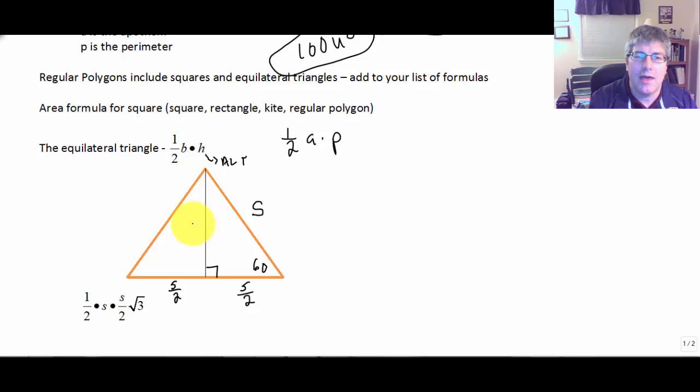And my altitude then is, well, in a 30-60-90, my X side is S over 2. So this is S over 2 times square root of 3. So that's my altitude.